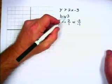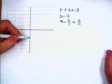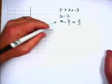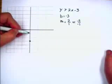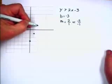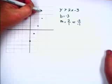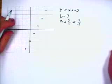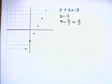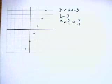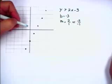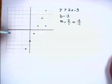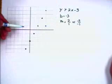To graph this we start with the y-intercept at negative 3, use the slope of 2 over 1 to plot additional points, but we're not going to draw the line just yet. We have to consider a couple of cases, so we're going to consider first a specific point and see if it meets the requirements of the inequality.